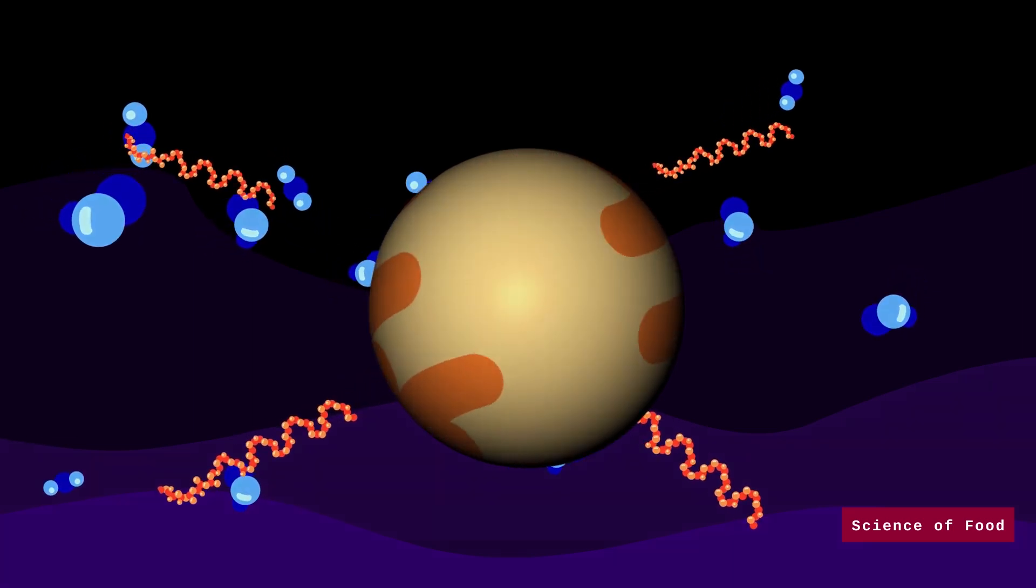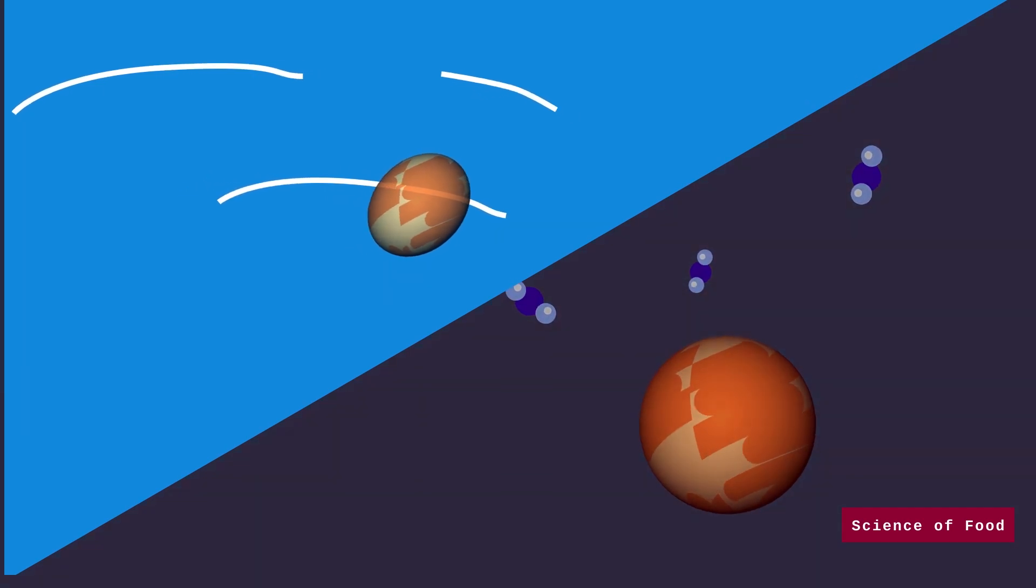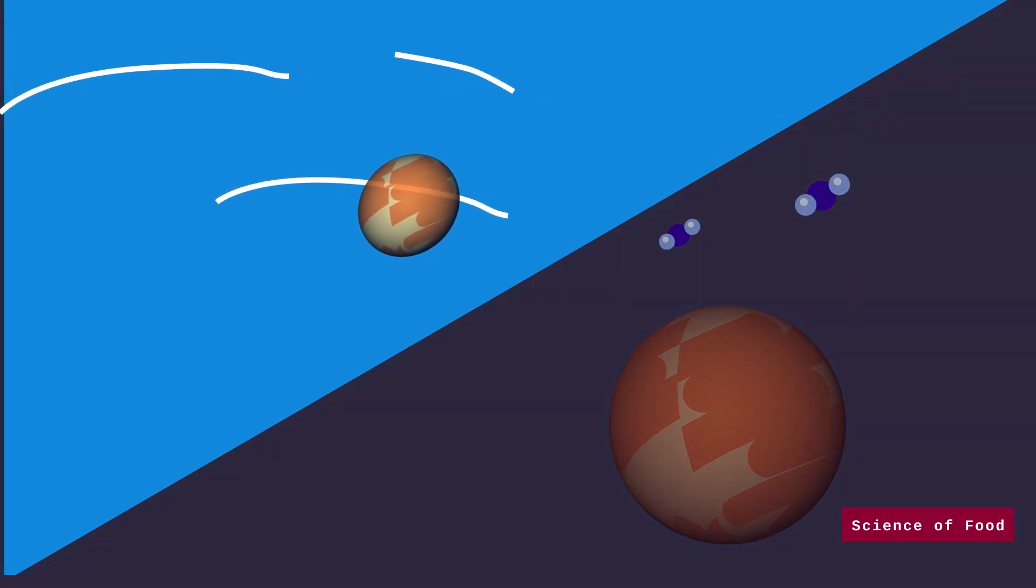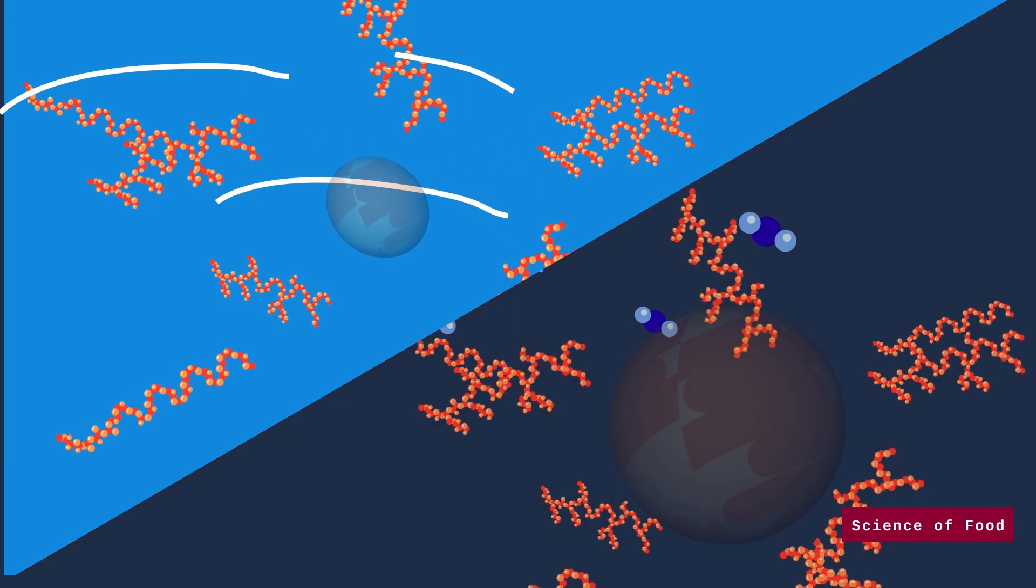When these two phenomena occur, it causes a thickening effect on the solution. When shear force is applied or during overcooking, the swollen starch molecules rupture, releasing the remaining amylose and amylopectin to the solution.